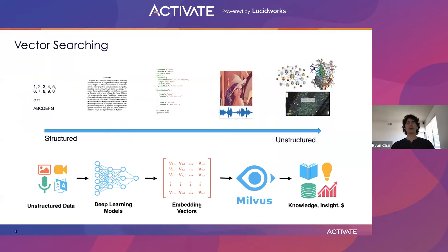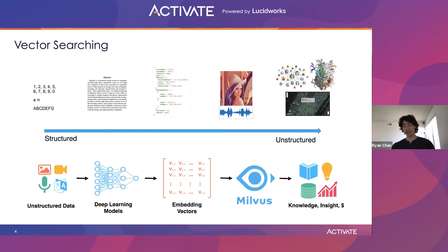Before we get into Milvus, a quick introduction to vector search. Traditional search models work best with numbers and text — things that we can think of as structured data. Structured data has an inherent structure to it, easily parsable and not much variation in form. We have applications that work quite well for those use cases. Many of us have worked with Lucene-based systems or something like Solr before — they do all right for text and document searching.